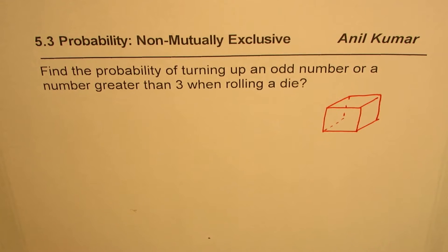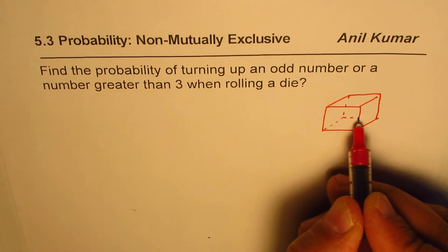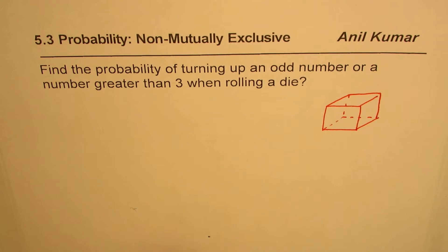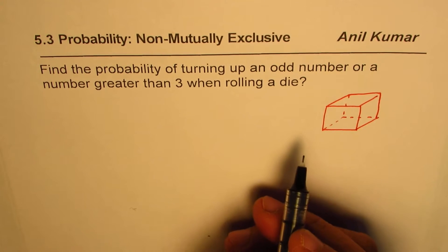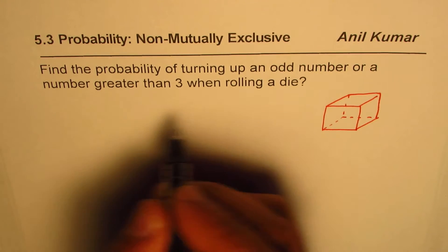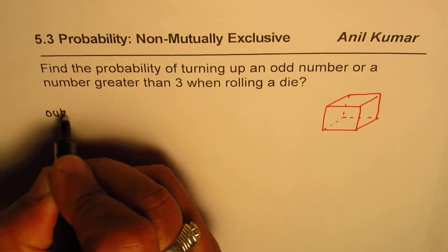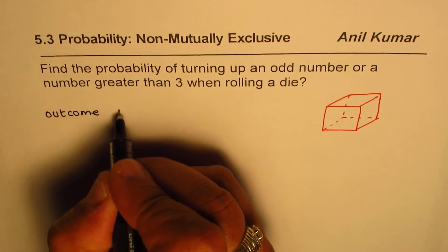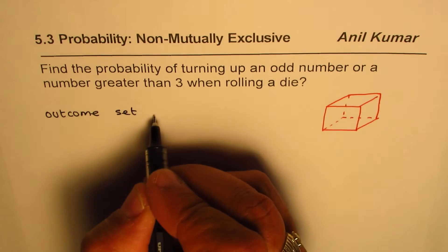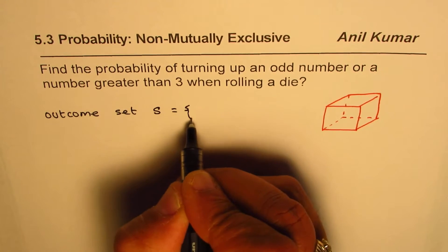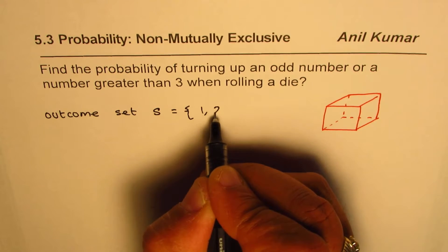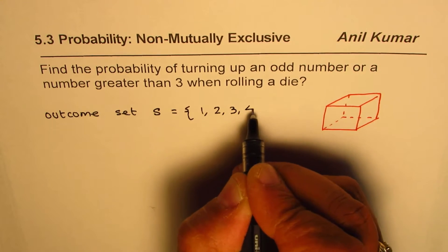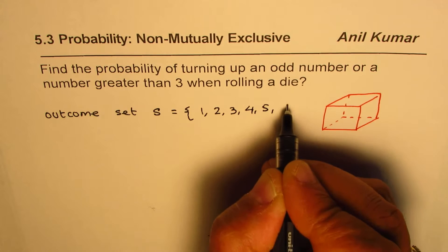It has 6 faces and therefore on each face we have numbers from 1 to 6. So in this particular case the outcome set is, we can write down outcomes, all the outcomes will be or we can say sample set or outcome set S is numbers from 1 to 6, right? 1, 2, 3, 4, 5 and 6.